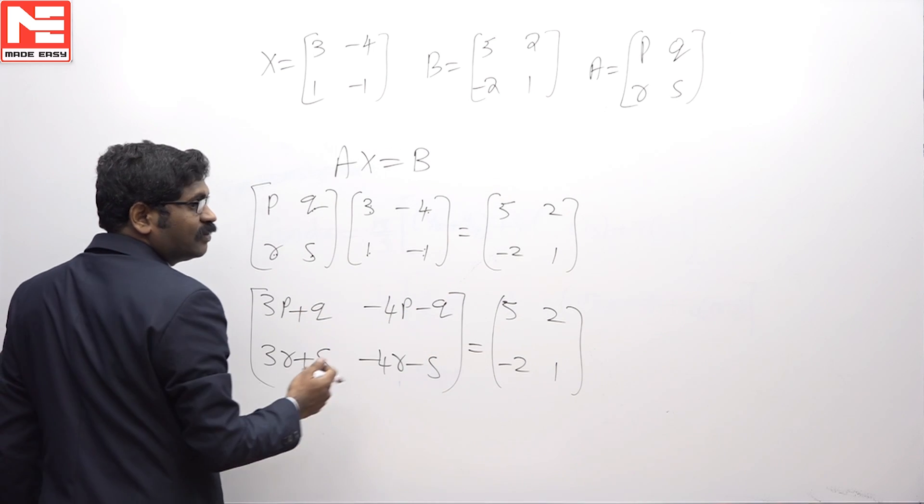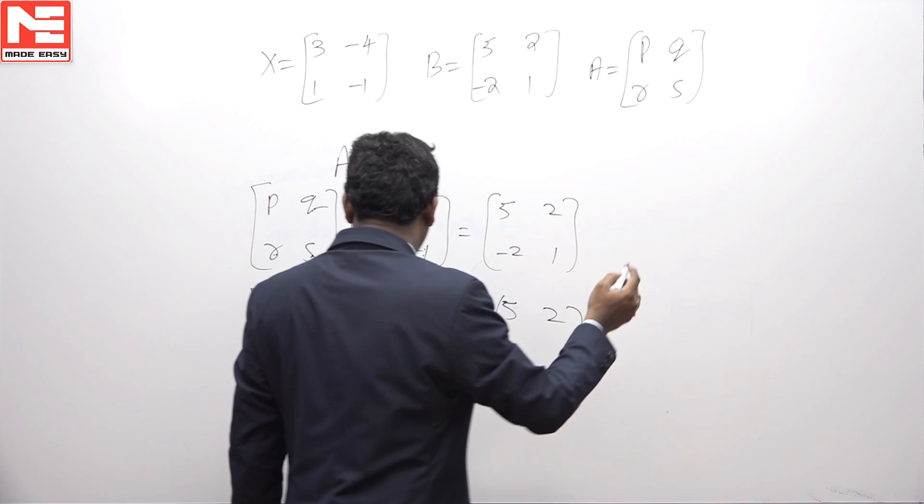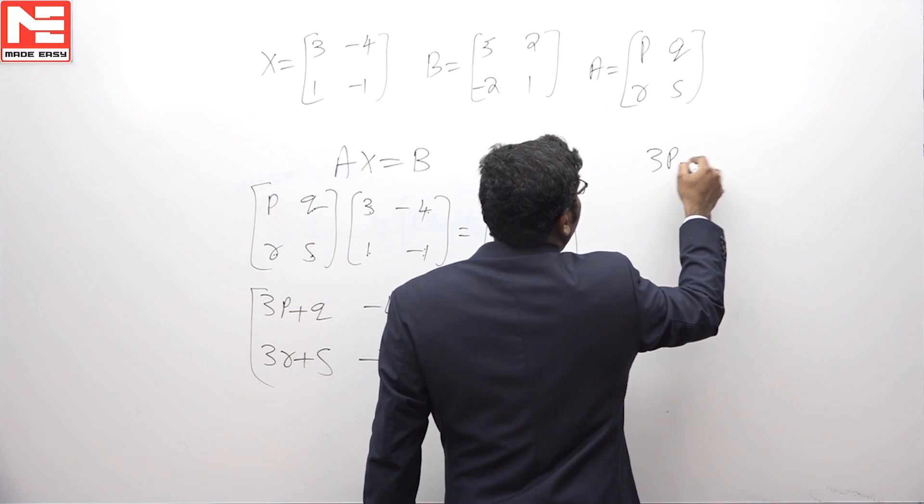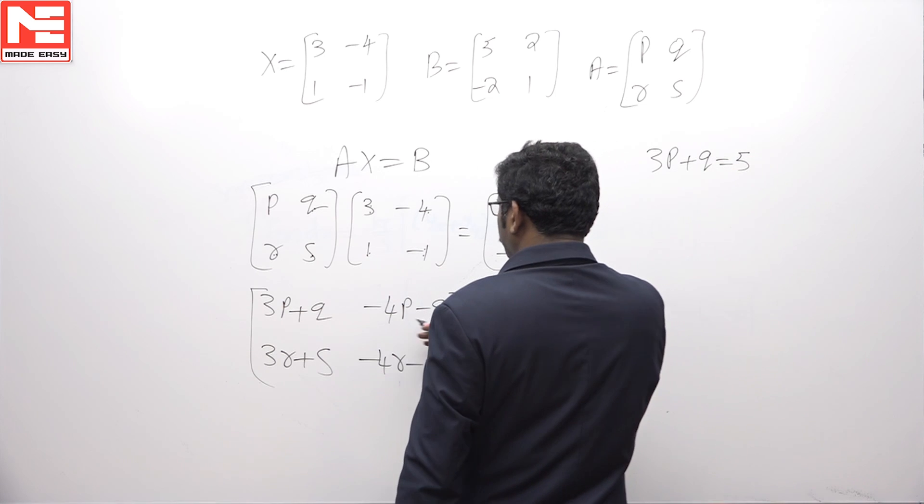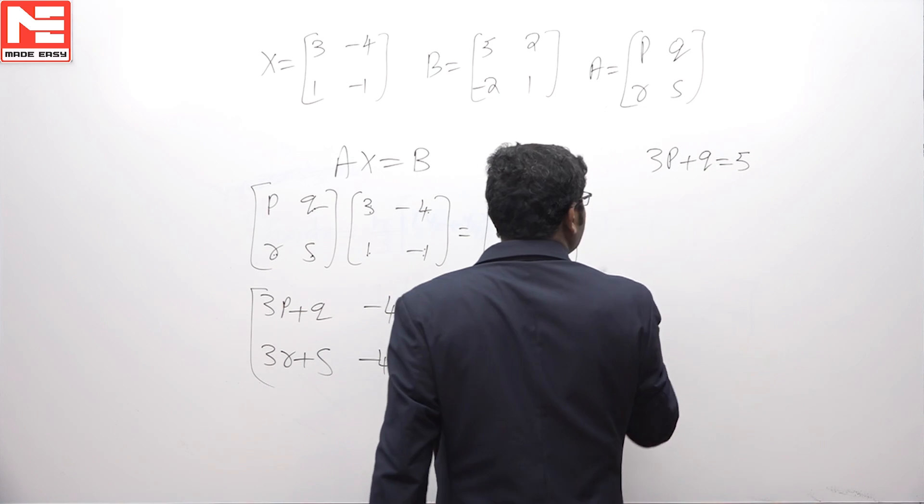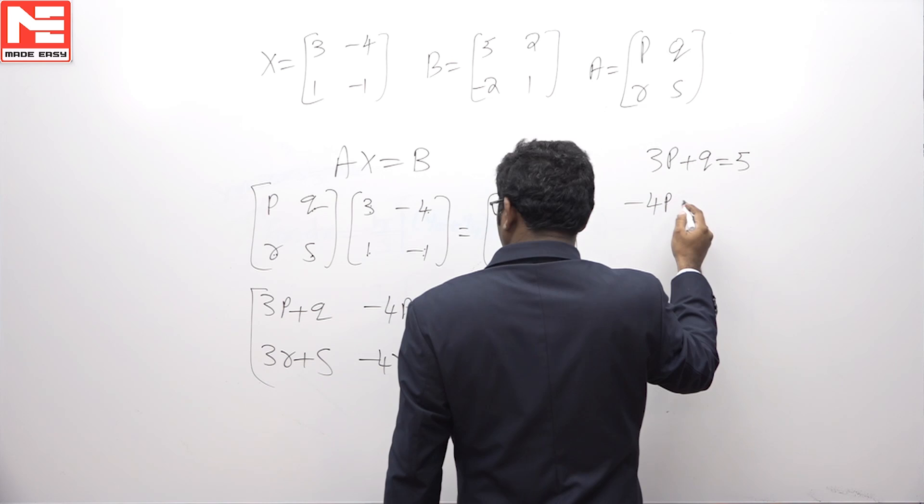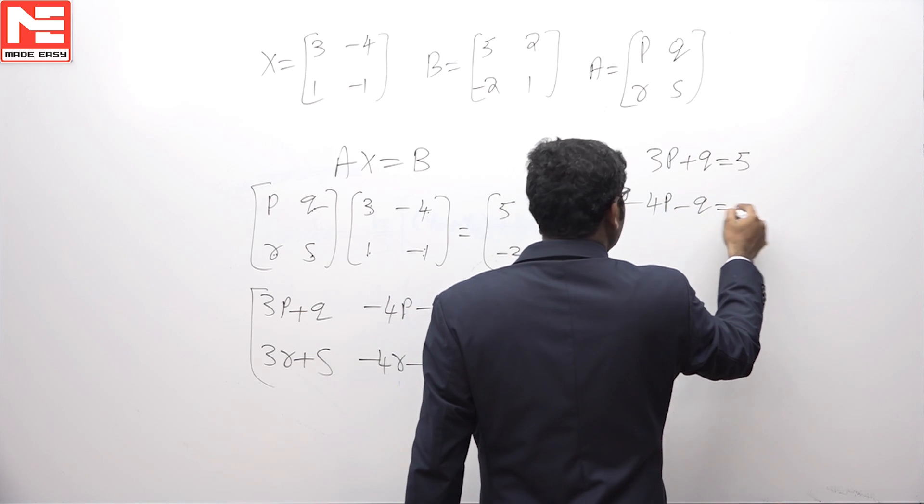Now, equate the corresponding elements. We will get 3P plus Q equals 5. Another equation in terms of P and Q is minus 4P minus Q is 2.